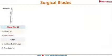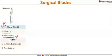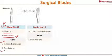Now let's discuss the various surgical blades. Blade number 11 has been asked in the latest PG exam. Blade number 11 has a sharp tip and is known as the stab blade. As it has a sharp tip, it can be used for incision and drainage, and also for arteriotomy.